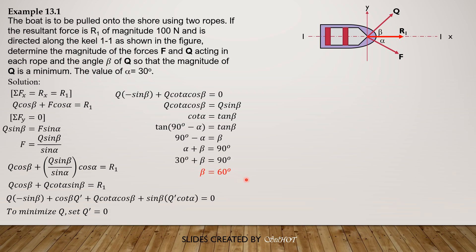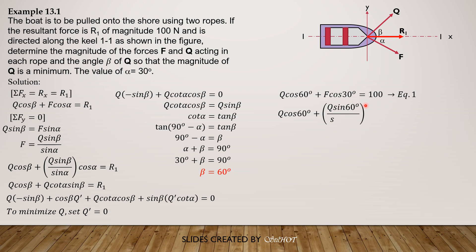So beta is equal to 60 degrees. Having found beta equals 60 degrees, let's substitute it into the equation. Take note that F equals Q sine beta over sine alpha. So Q cosine 60 degrees plus F cosine 30 degrees equals R1, which is 100. We can now compute Q equals 50 newtons. Likewise, F can now be solved from this equation: 50 sine 60 divided by sine 30 degrees. So F is equal to 86.6 newtons.